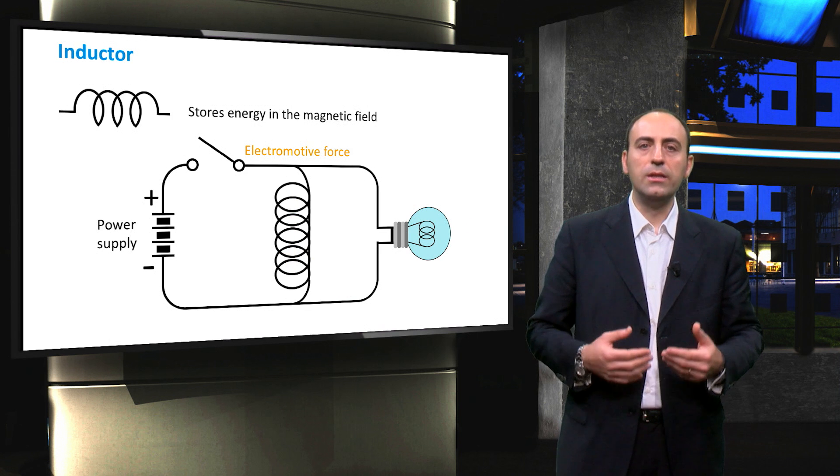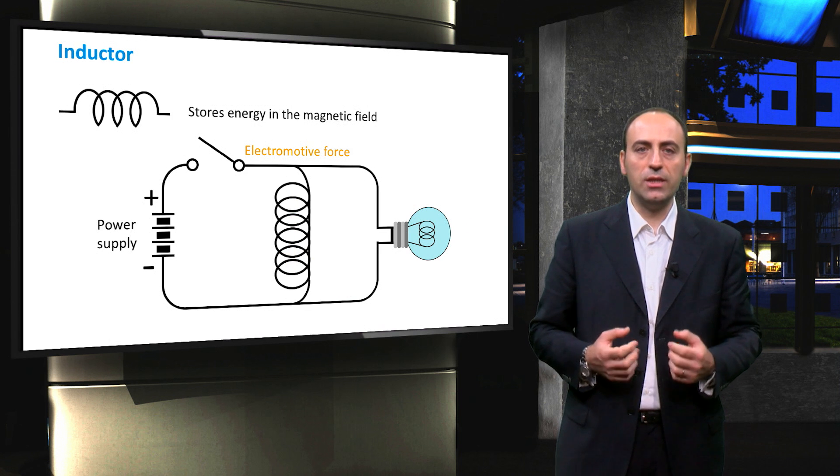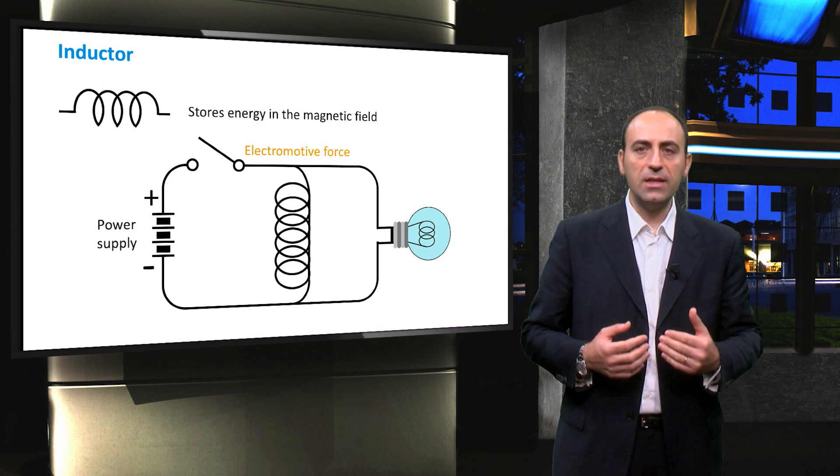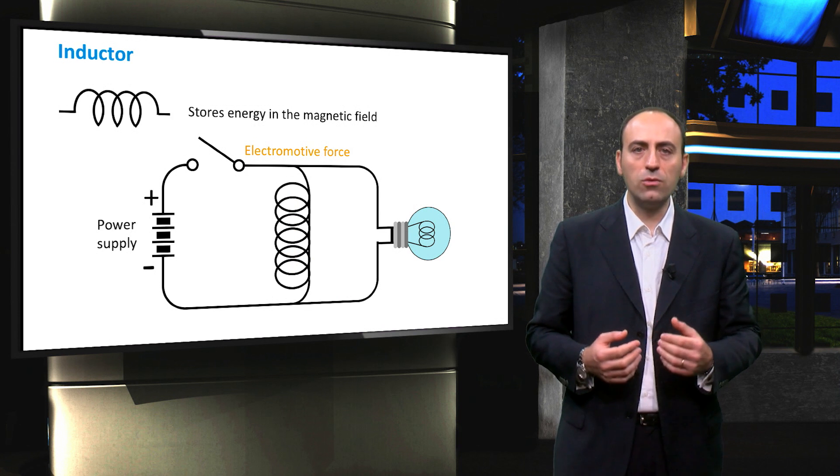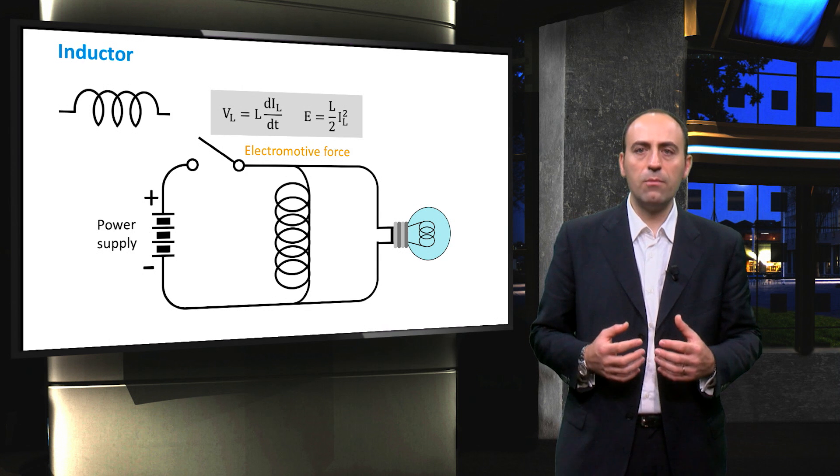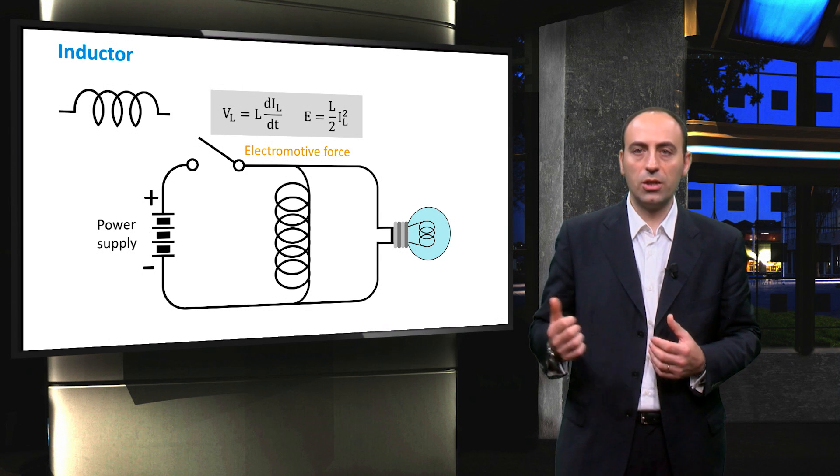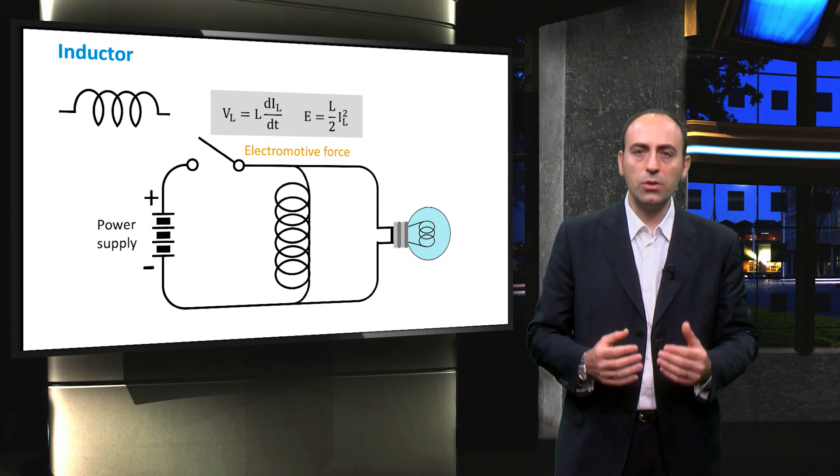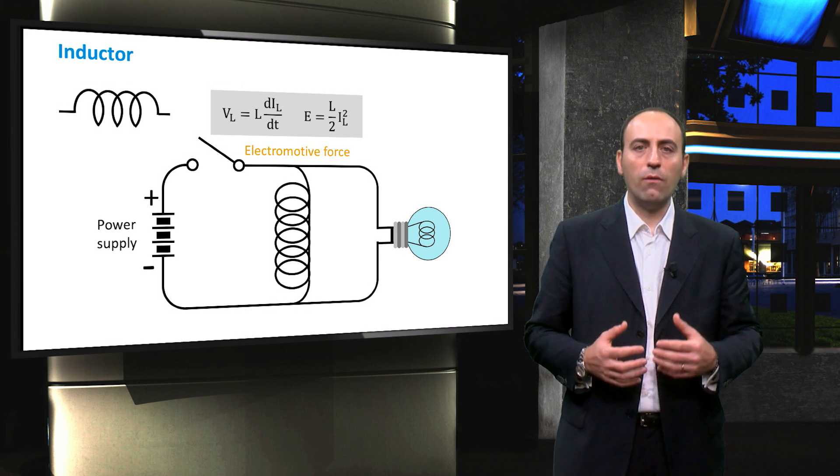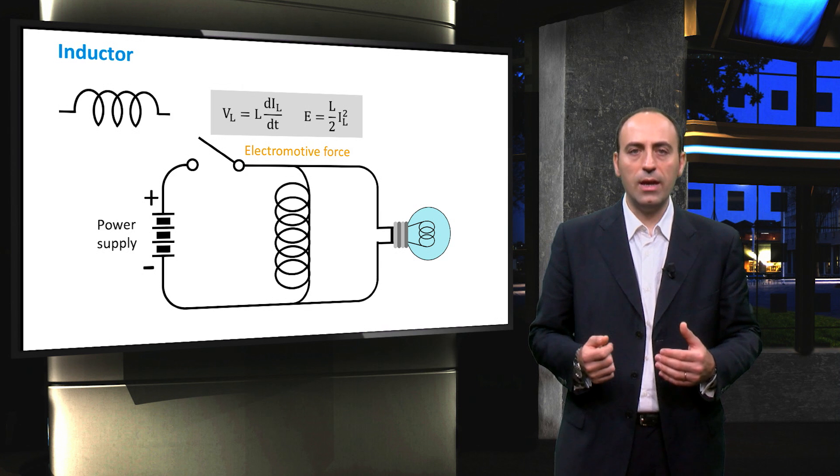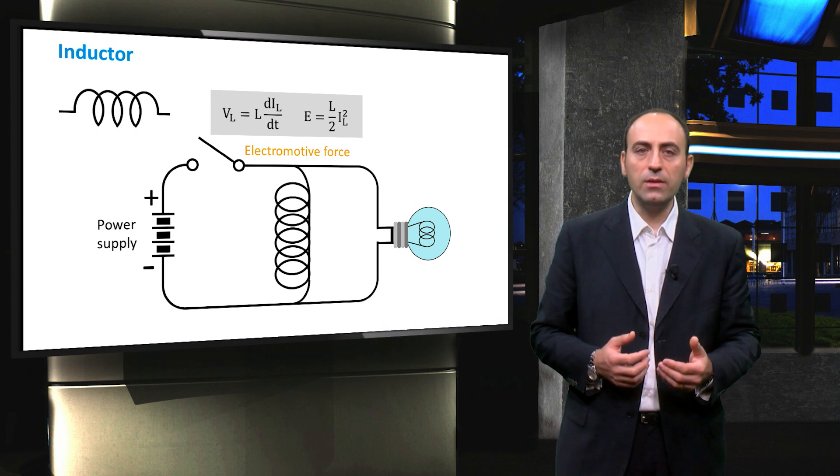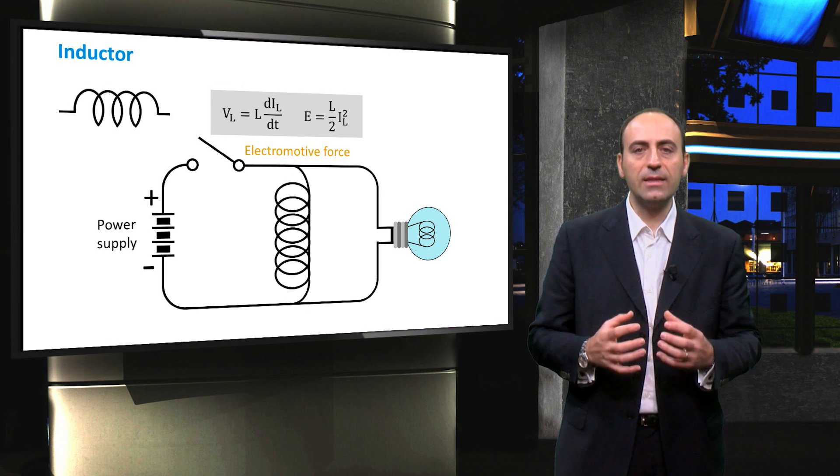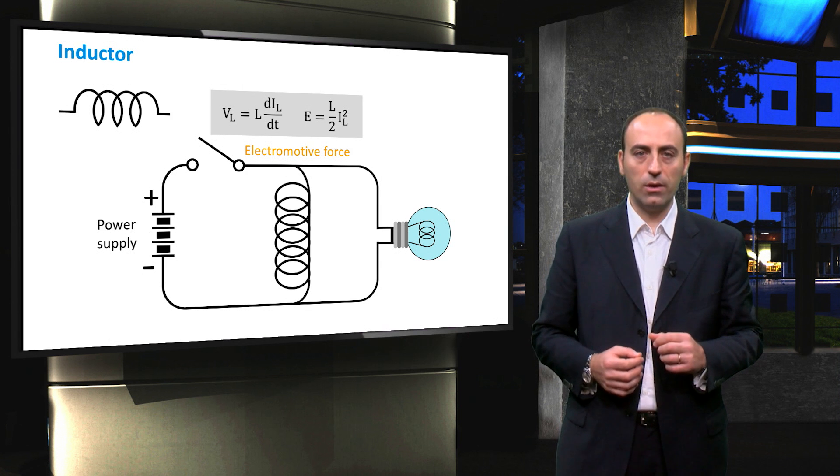In other words, the inductor stores energy in its magnetic field and it tends to resist any change in the amount of current flowing through it. This type of behavior is given by this first order differential equation, where the voltage across the inductor is proportional to the derivative in time of the current that flows in the coil, and by calculating this current, it is also possible to calculate how much magnetic energy is stored into the coil.